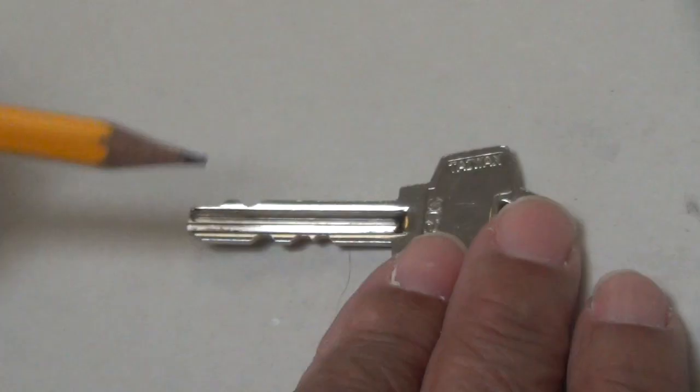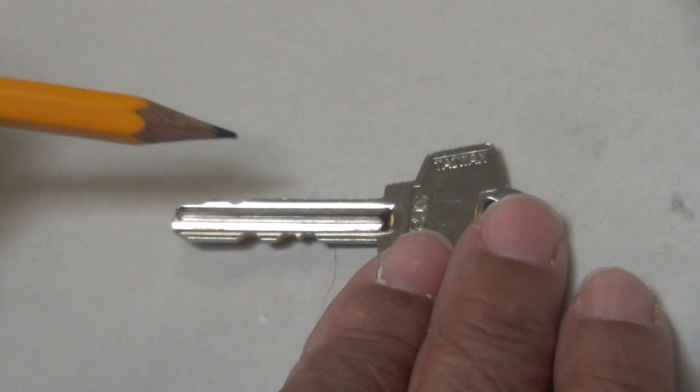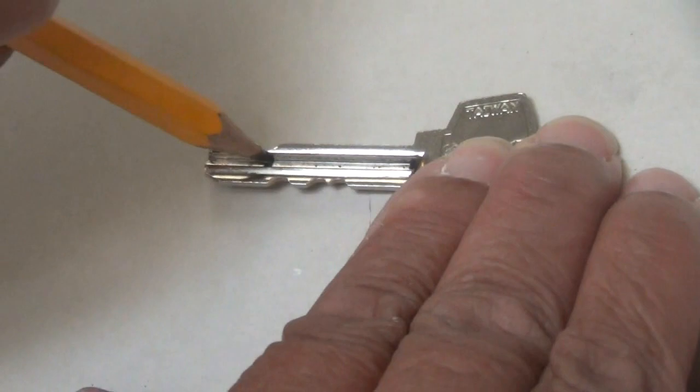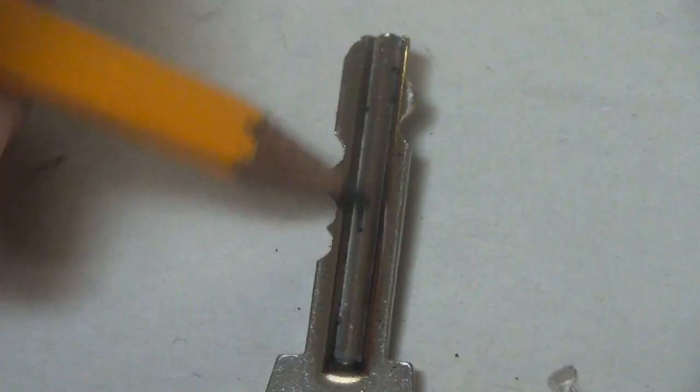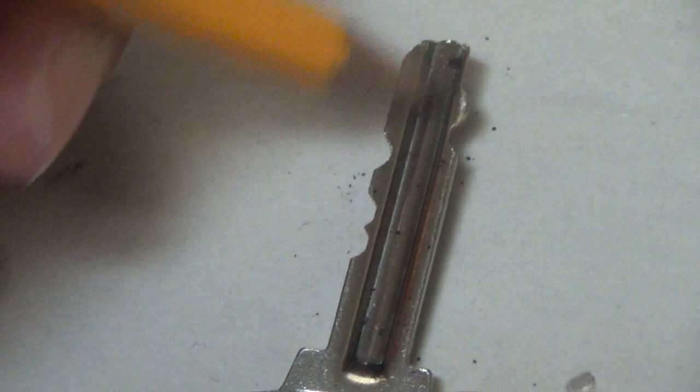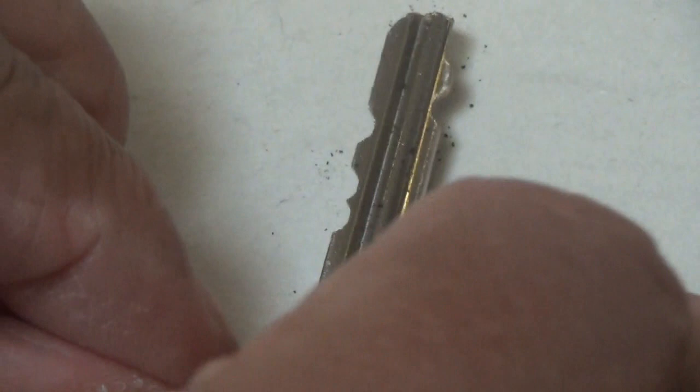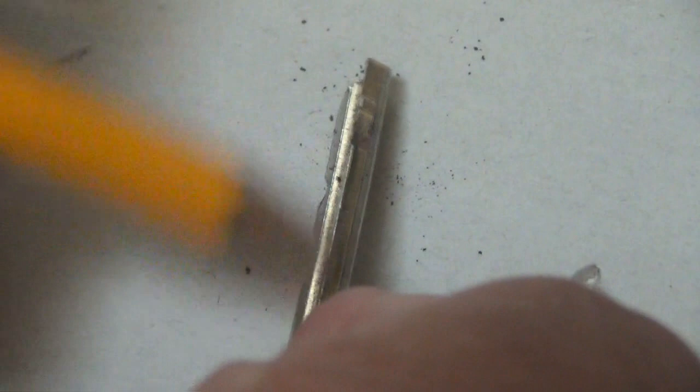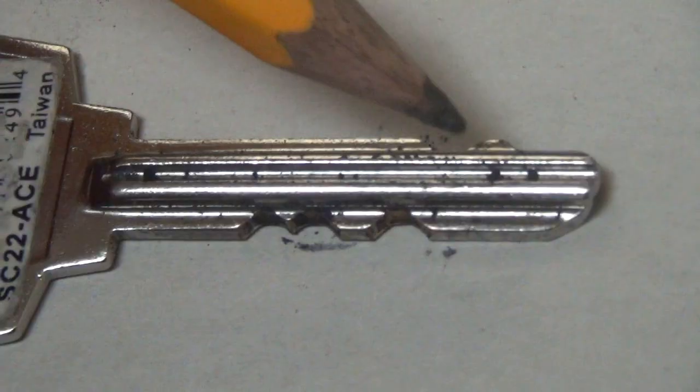Now I'm gonna take this pencil, and I'm gonna draw on top of this key, as heavy as I possibly can. And when I get a nice amount of graphite on there, I'm gonna turn it on its side. And I'm gonna get the edges as well. The more you can put on, the more effective it will be.